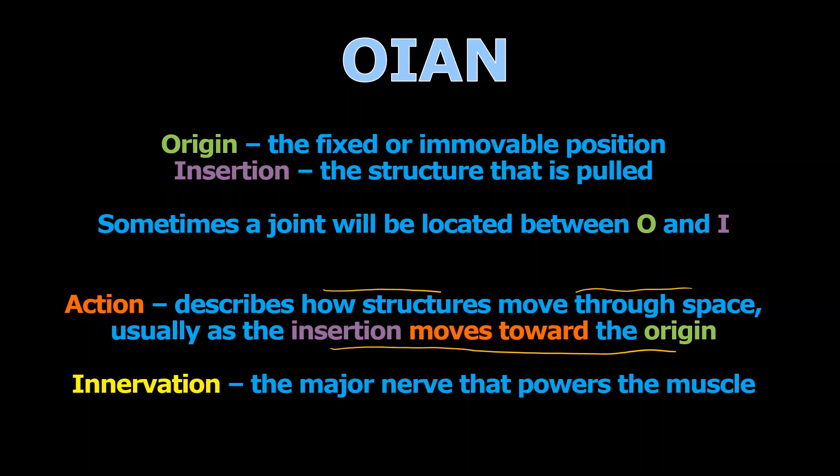Innervation is what the N stands for in O-I-A-N. It's actually spelled with an I, but we use O-I-A-N because it's easy to take notes with quickly. We're simply talking about the nerve that powers that particular muscle or group of muscles — the innervation, what innervates the muscle, what provides the nervous system connection.